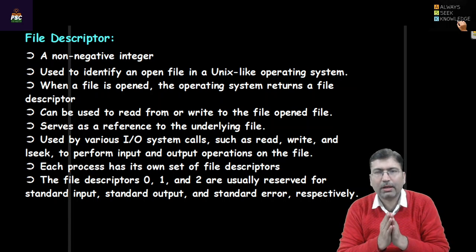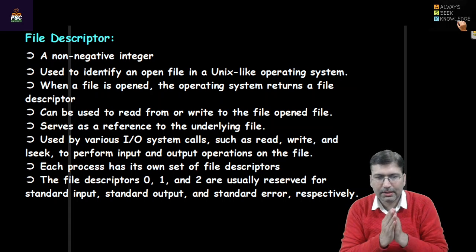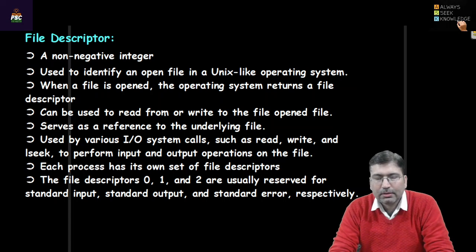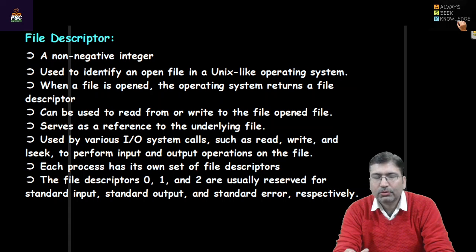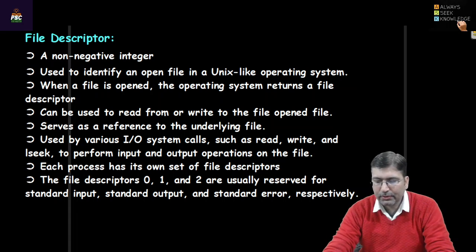Welcome back to this session. I am going to elaborate on two very important numbers in Unix-based or Linux systems. The very first is the file descriptor, which I have reflected on the screen. I am going to elaborate on file descriptors because in experiment 3 you will be using system calls related to file systems. Those system calls deal with files, and files need to be identified by the system. The system identifies files using two numbers: one is the file descriptor and the other is the inode number.